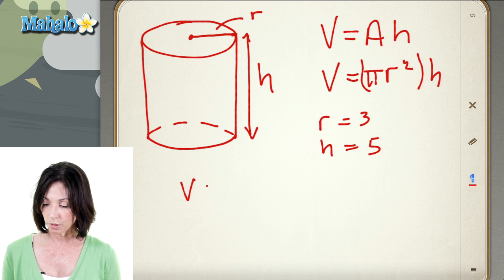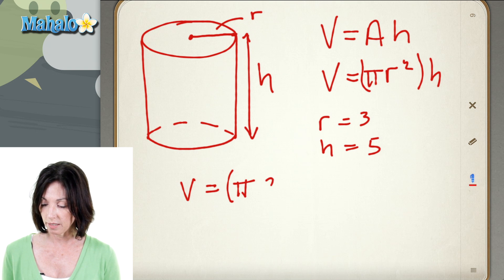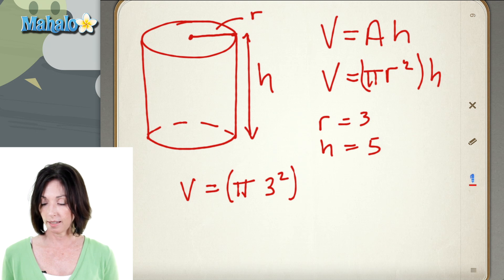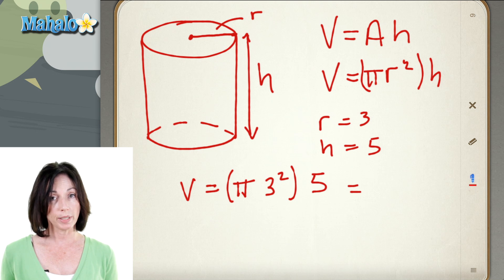The volume is equal to pi. Now, we're going to take r squared, so that will be three squared, times the height, which is five. Okay, so three squared is nine,